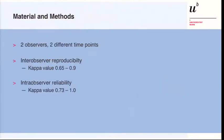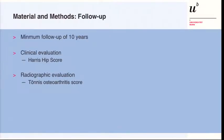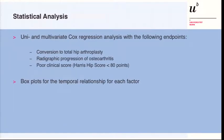We had two observers at two different time points and found good inter- and intra-observer reliability for all parameters. We performed a 10-year follow-up evaluating patients clinically with the Harris Hip Score and conventional radiographs using the Tönnis score. We then conducted univariate and multivariate Cox regression analysis with three endpoints: conversion to total hip arthroplasty, progression of osteoarthritis, and poor clinical score defined as Harris Hip Score below 80 points.